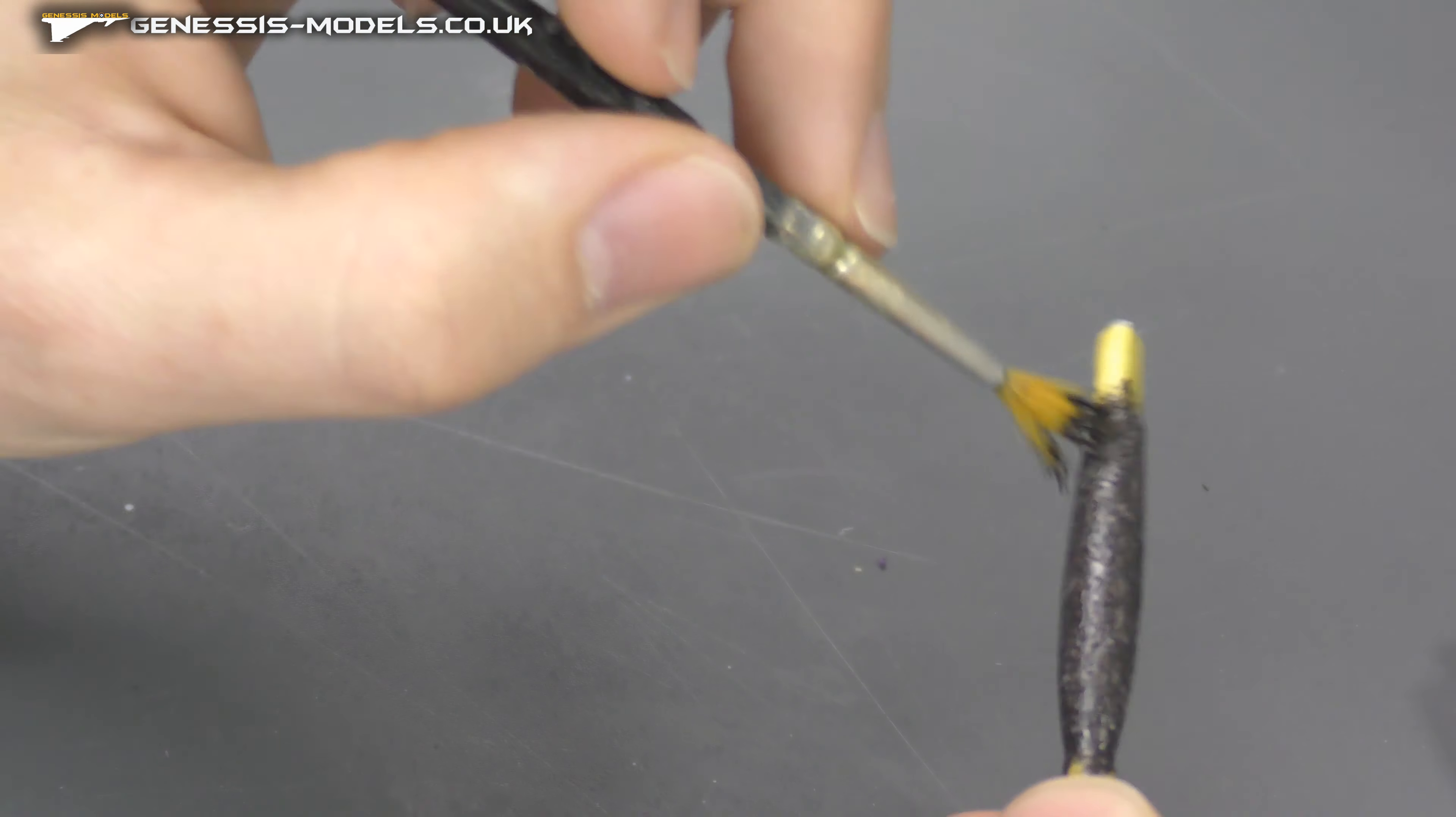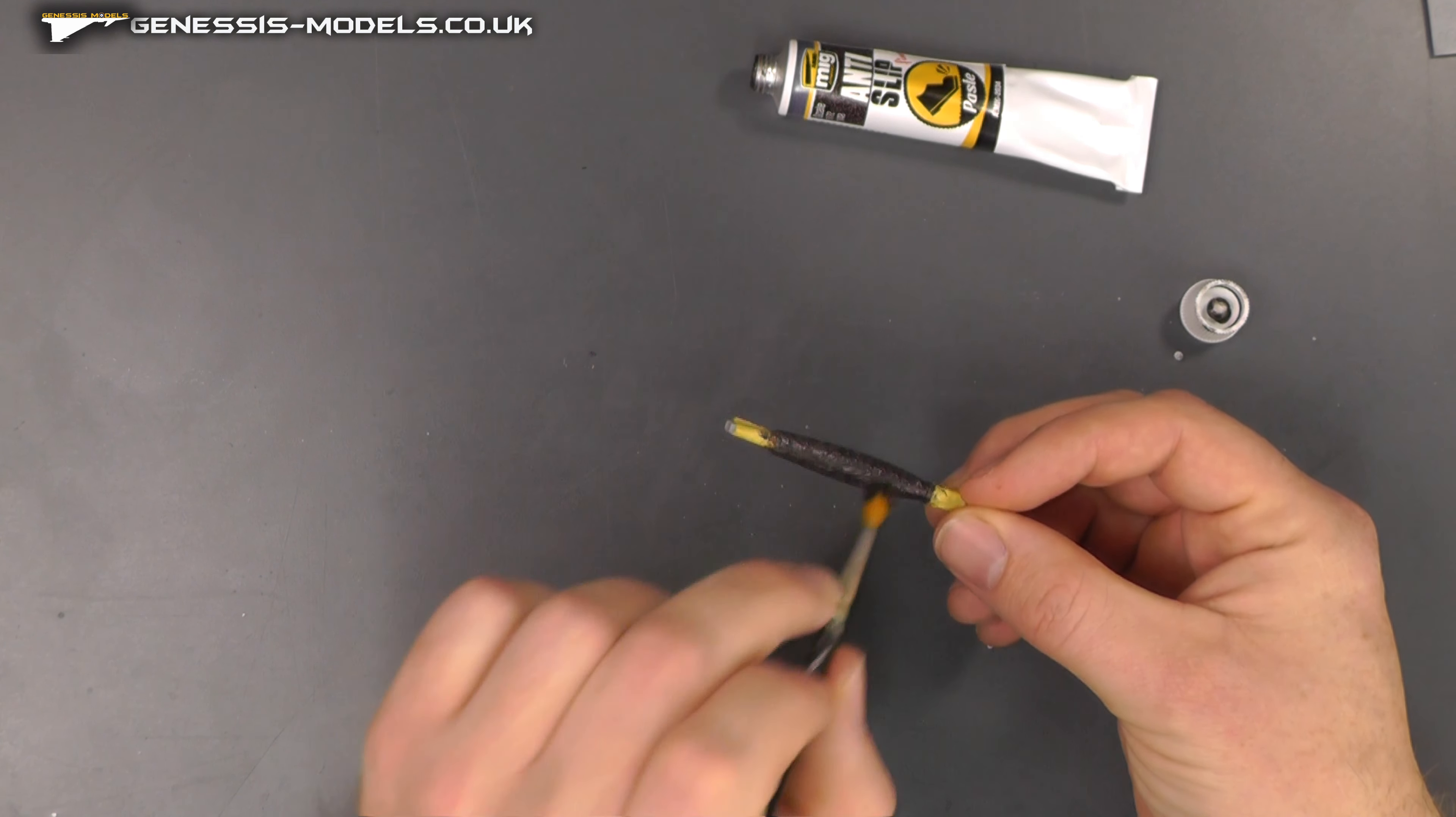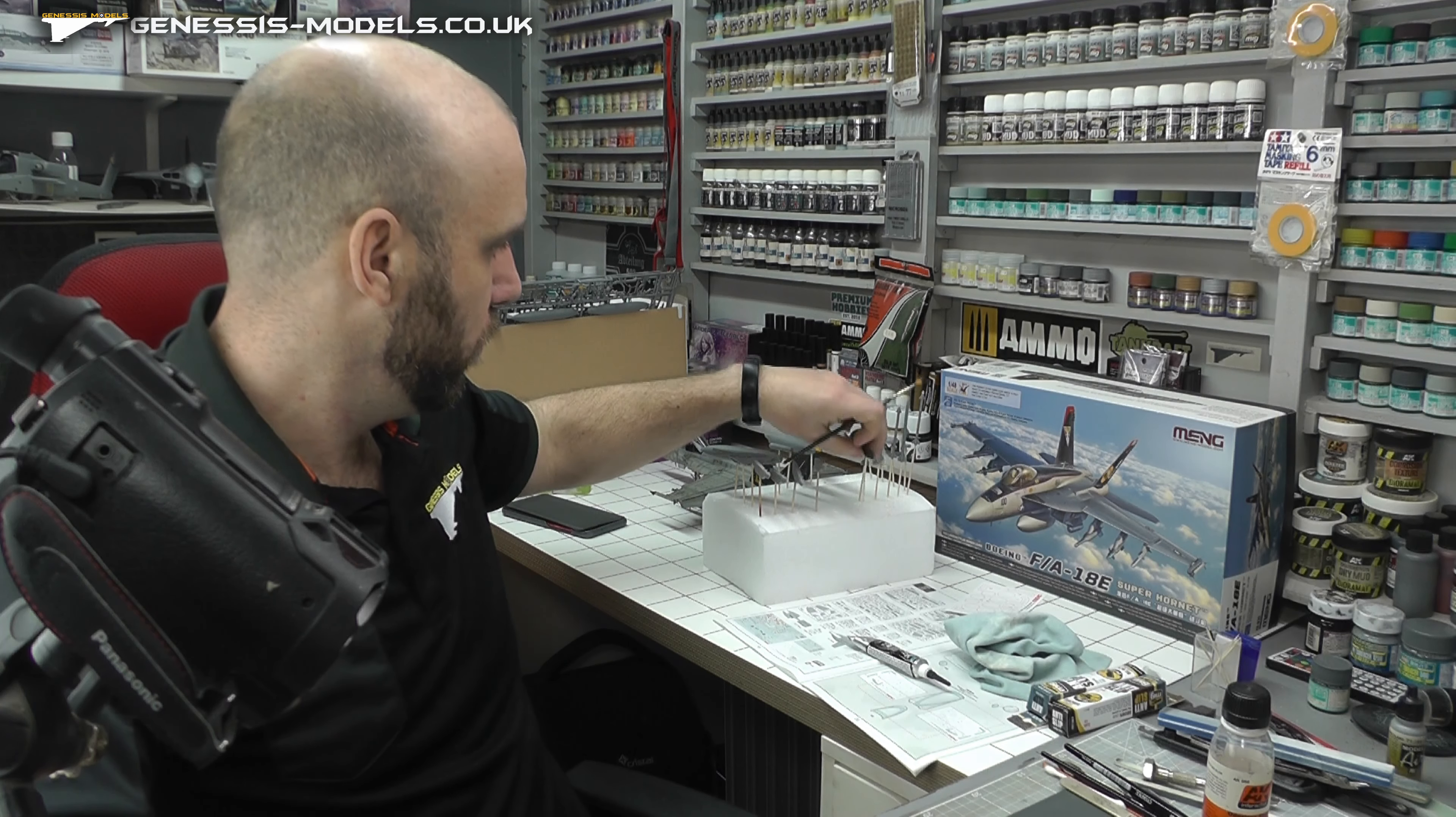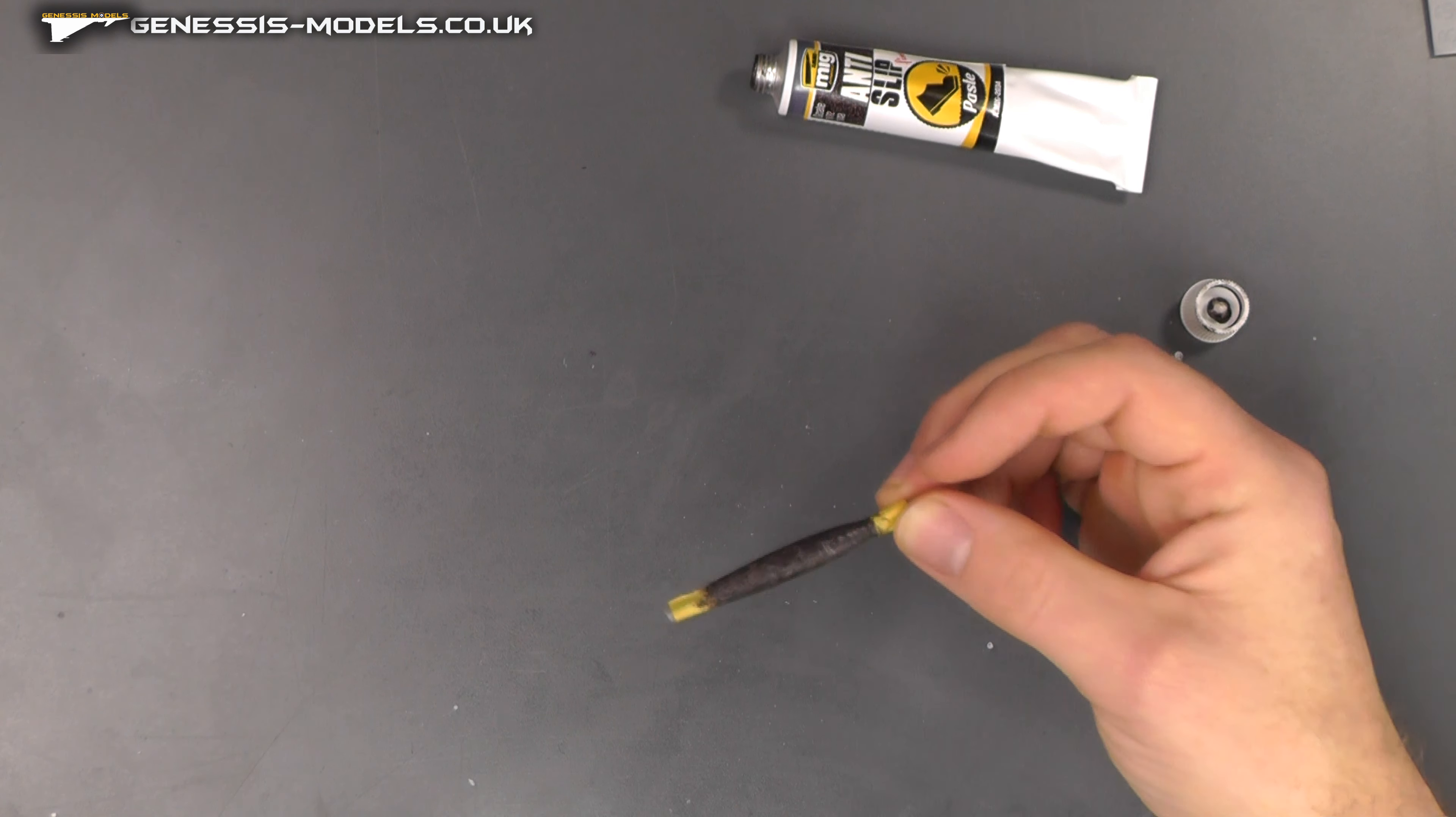Alright, now once you've dabbed this on for the first coat we want to let it dry. Well, for a bit of an experiment with this video I have got two of these. I have done one already as you can see here. This is going to be one coat. I'm going to put two coats on this one and see what kind of results we get. So I'll leave that to dry, put a second coat on and I'll show you the next bit.